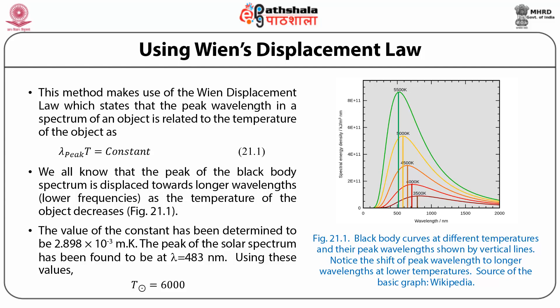The figure shown here displays black body curves at different temperatures with their peak wavelengths shown by vertical lines. We can notice the shift of peak wavelengths to longer wavelengths at lower temperatures. Wien's displacement law is based on this black body curve — it is the relation between the wavelength at the peak and the temperature: lambda_peak × T = 2.898 × 10⁻³ m·K.